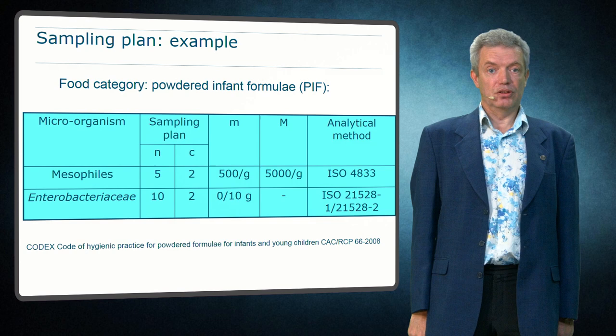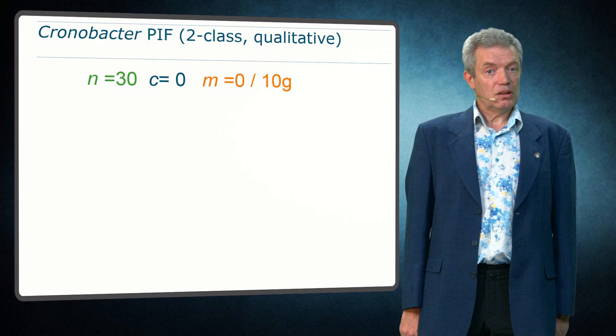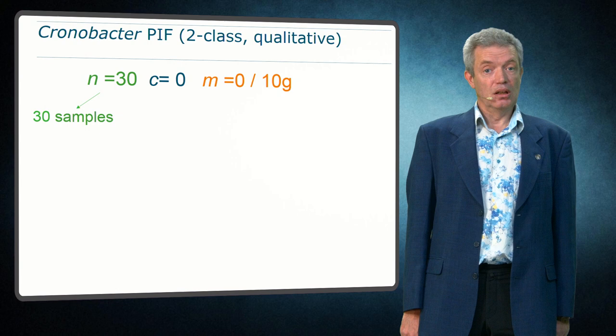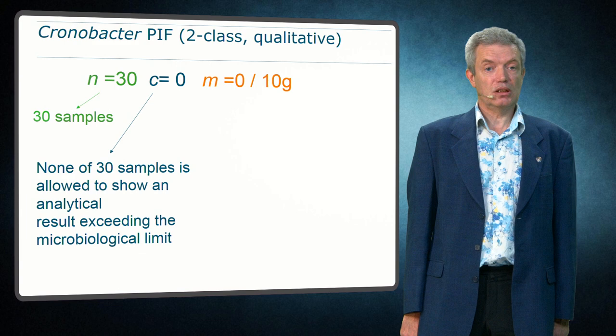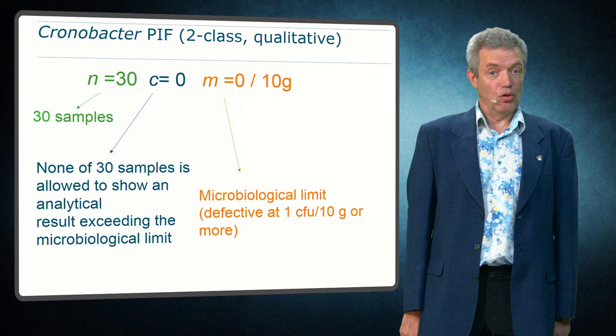So now look at the anatomy of a sampling plan. For Cronobacter in Powdered Infant Formula the N equals 30, meaning that 30 samples are taken. The C equals zero, so none of the 30 samples are allowed to be above the microbiological limit, and the microbiological limit in this case is absence in 10 grams.